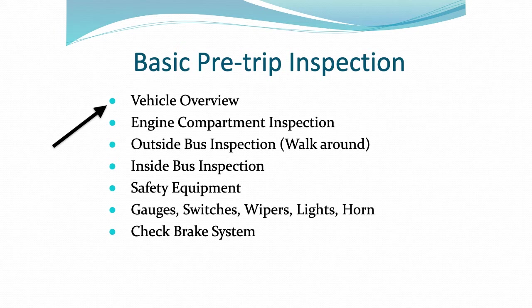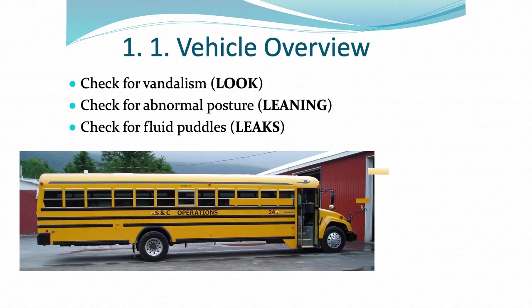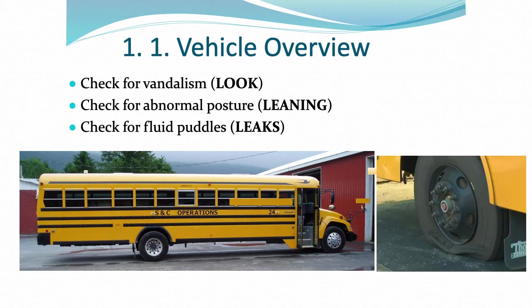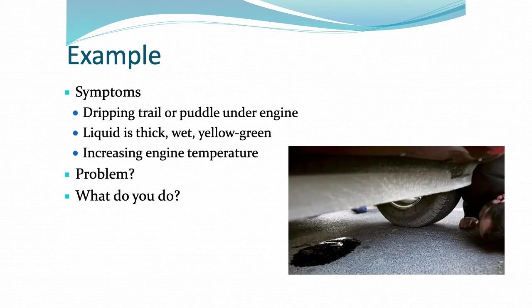Consider the following sequence of coverage. Do an overview of the bus as you approach the vehicle. Look at the bus — has it been vandalized in some way? Check for leaning. Did a tire go flat? Check for leaks or fluid puddles under the bus; this could be evidence that a hose may have sprung a leak. Consider the texture and color of the fluid puddle and report your descriptive findings to the mechanic.